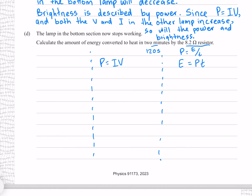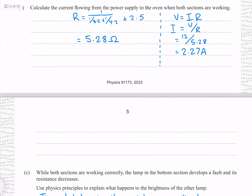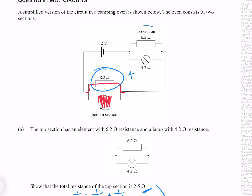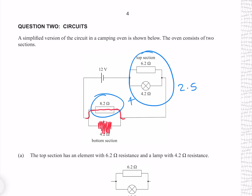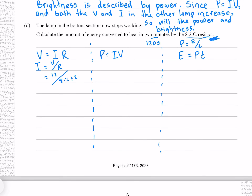We can find the current because we know the total voltage equals the total current times the total circuit resistance, and since all the current flows through the 8.2 ohm resistor they are one and the same. Solving for current by dividing both sides by resistance, our total voltage is 12 and our total resistance is the 8.2 ohm resistor plus the 2.5 ohm top section found earlier. This gives 1.12 amps to three significant figures.